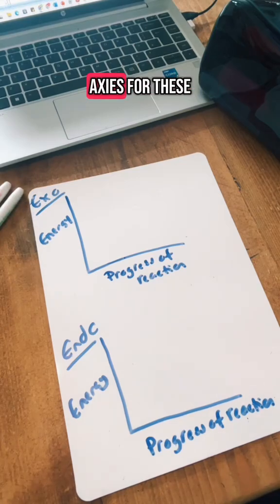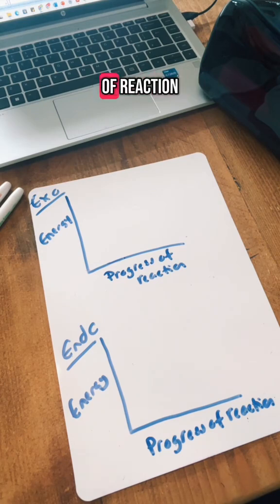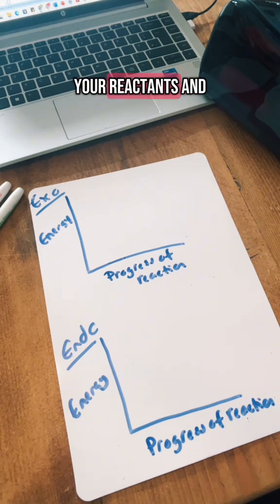You are usually given the axes for these reaction profiles and you've got to draw them for each type of reaction. So the key thing to do first is always do your reactants and your products.